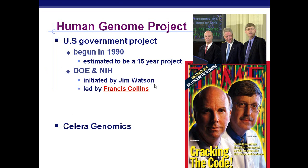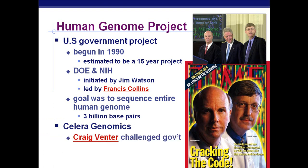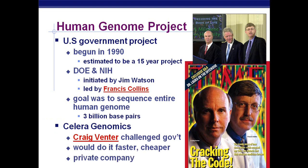You might recognize the name Watson here. The goal was to sequence the entire human genome, which has 3 billion base pairs. But in 1998 or so, Celera Genomics came in under Craig Venter and challenged the government — he claimed he could do it faster and cheaper as a private company. All in all, they ended up working together, and in 2000 produced a rough draft of the human genome: 90% sequenced, 99% accurate.